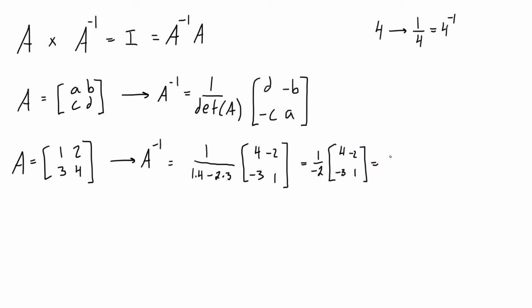And if we just distribute this in, 4 times negative 1 half, the first element here is going to be negative 2, and then we have negative 2 times negative 1 half, that's going to give us positive 1, and then this guy, negative 3 times negative 1 half, that's going to give us positive 1.5, and then 1 times negative 1 half, that will be negative 0.5.